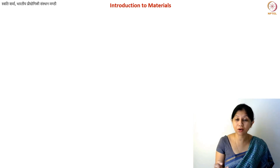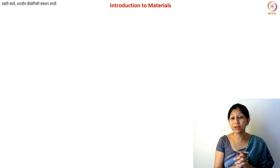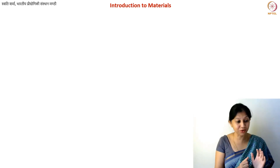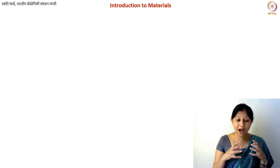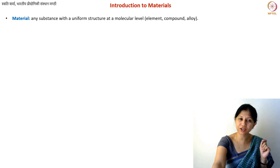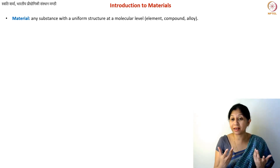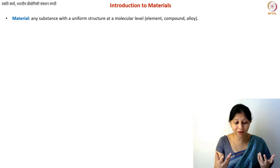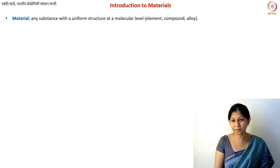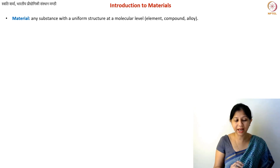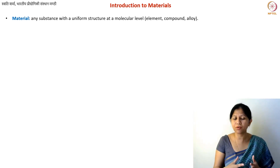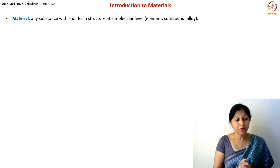Something very important for this entire course: carbon is not one unique material. It is a unique element — the atomic structure remains the same — but you have several different carbon materials. The definition of a material itself is very general: any element, alloy, or compound can be called a material as long as you have a uniform structure at a molecular level. If you take two samples of the same material you should get the same properties. In manufacturing, the term material is used very broadly — everything tangible is a material.